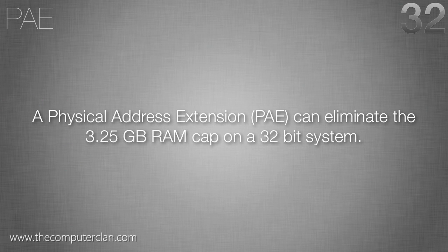Now with 32-bit, there is actually a way you can get more RAM registered in the system. You can have a 32-bit processor, but if your 32-bit processor has something called a Physical Address Extension, you can eliminate that 3.25 gigabyte RAM cap. So you'll still only have 32-bit speed, but you can actually have more than 3.25 gigabytes of RAM with a PAE.